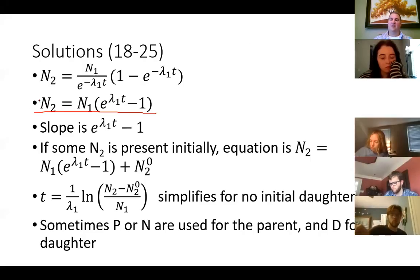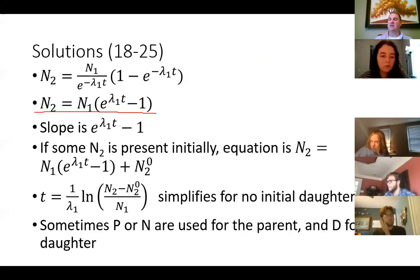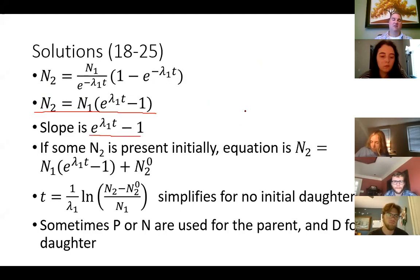When you're solving for the amount of the daughter in terms of the present amount of the parent, that's the underlying equation here. Notice the sign on the exponential changes — you swap the spots with the 1 and the e. The other important thing here is that the slope of this relationship is e to the lambda-1-t minus 1.